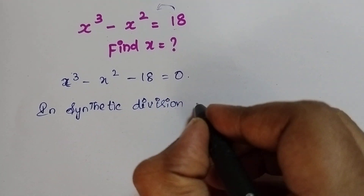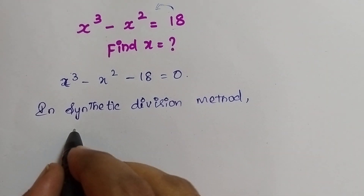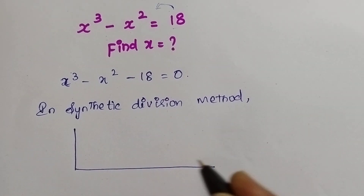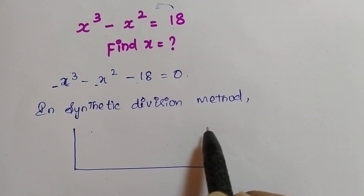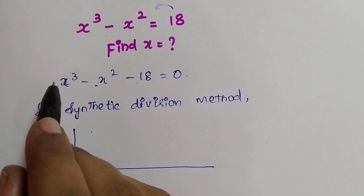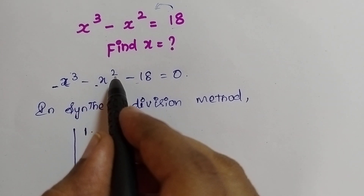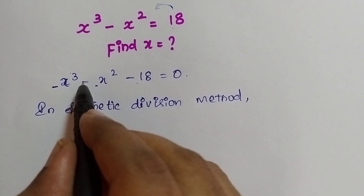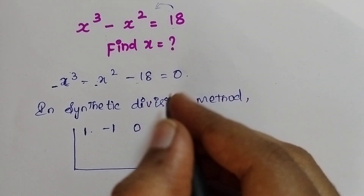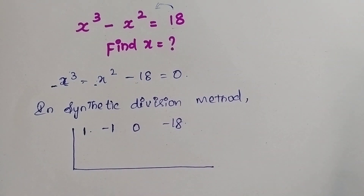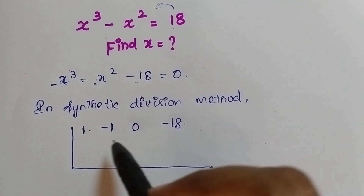Some of you may be aware about that. If not, let's learn. So in the synthetic division method, I am going to draw like this and write the numbers step by step. The higher power is x cubed, whose coefficient is 1. Then x squared, whose coefficient is minus 1. There is no x term, so I am going to put 0 here. And then the constant term is minus 18.